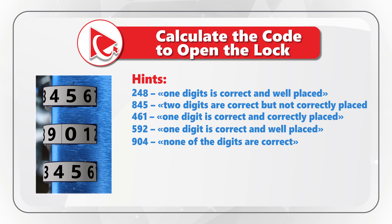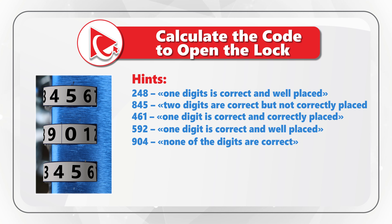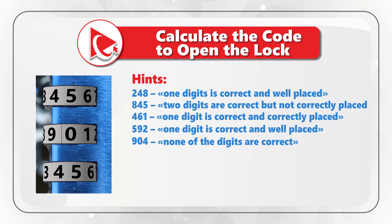The hints are: in the digits 248, only one digit is correct and well placed. In the digits 845, two digits are correct but not correctly placed. In the digits 461, only one digit is correct and it is correctly placed. In the digits 592, only one digit is correct and it is well placed. And last but not least, in the digits 904, none of the digits are correct.